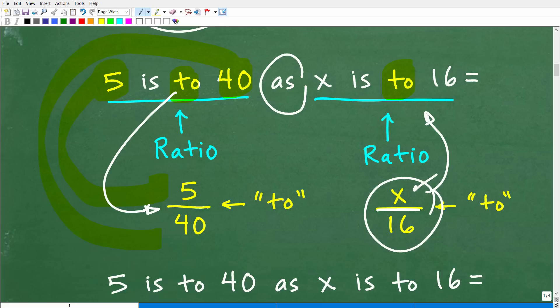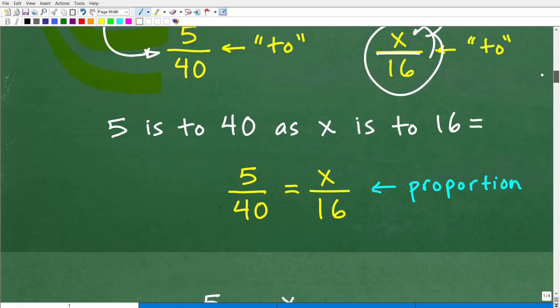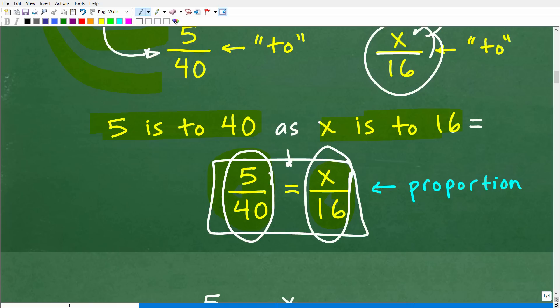So we have 5 is to 40 as. We've got to talk about this word as right here. And this is going to be the equal sign, okay? So let's go ahead and put this together now. So we have 5 is to 40, which is this right here. And then x is to 16 is this right here. And as is the equal sign. So we have 5 is to 40 as x is to 16. So this is what we have right here.